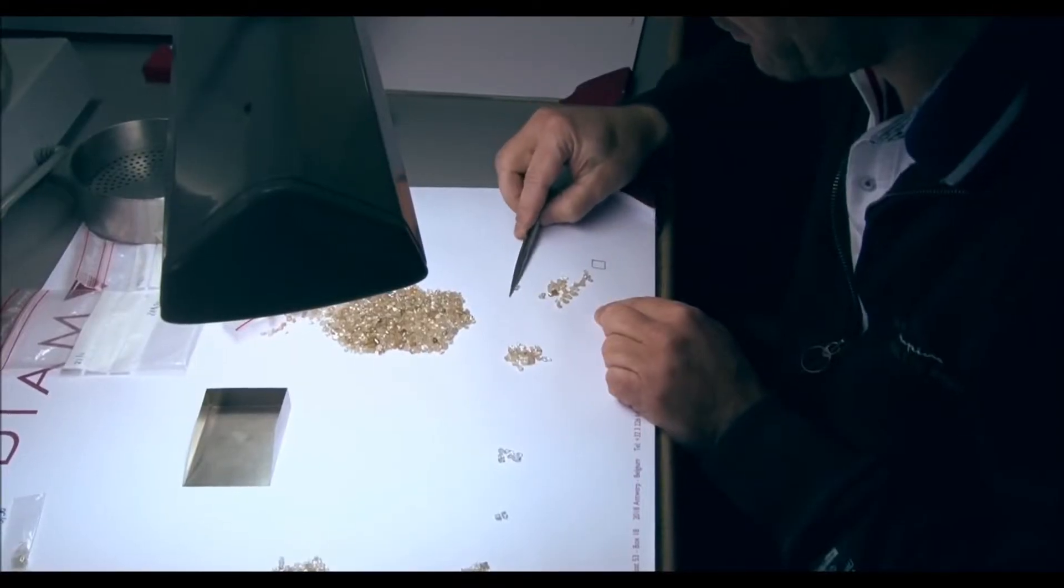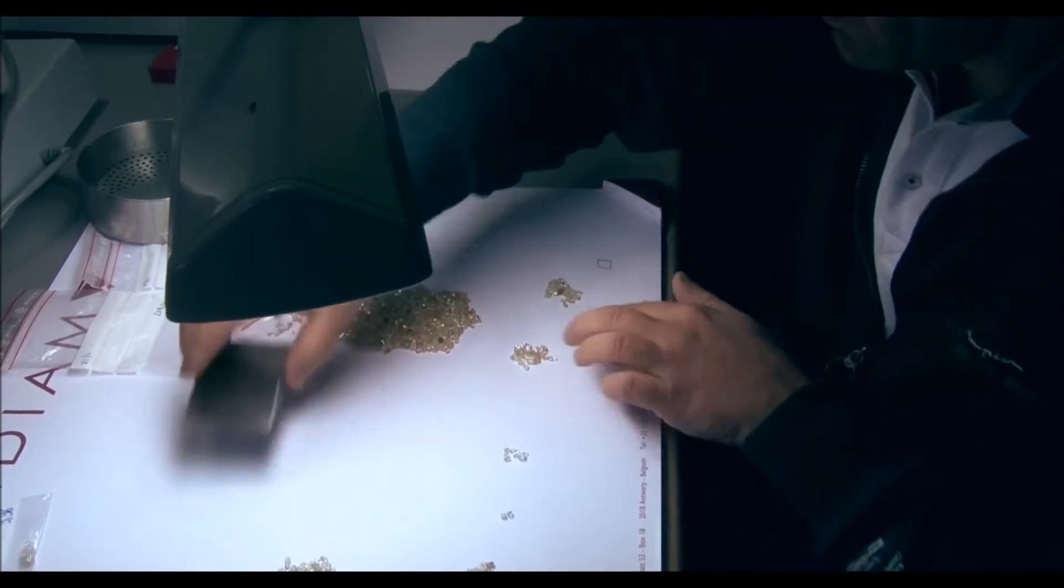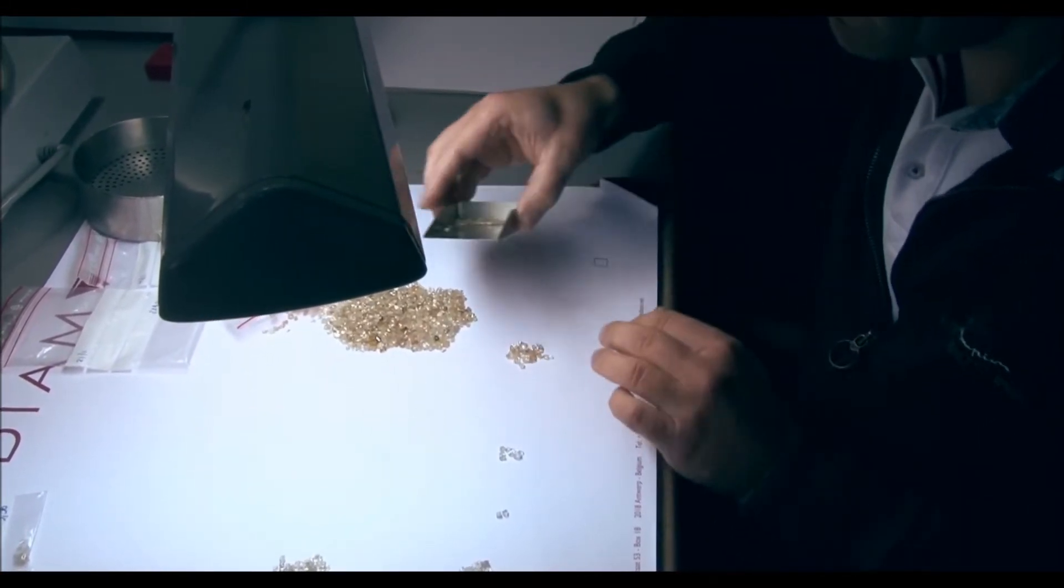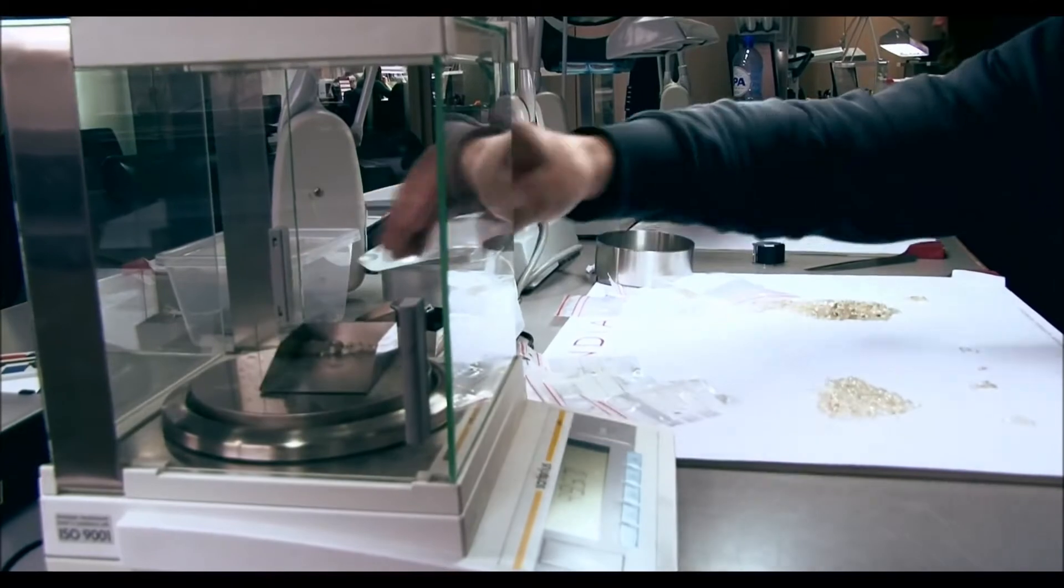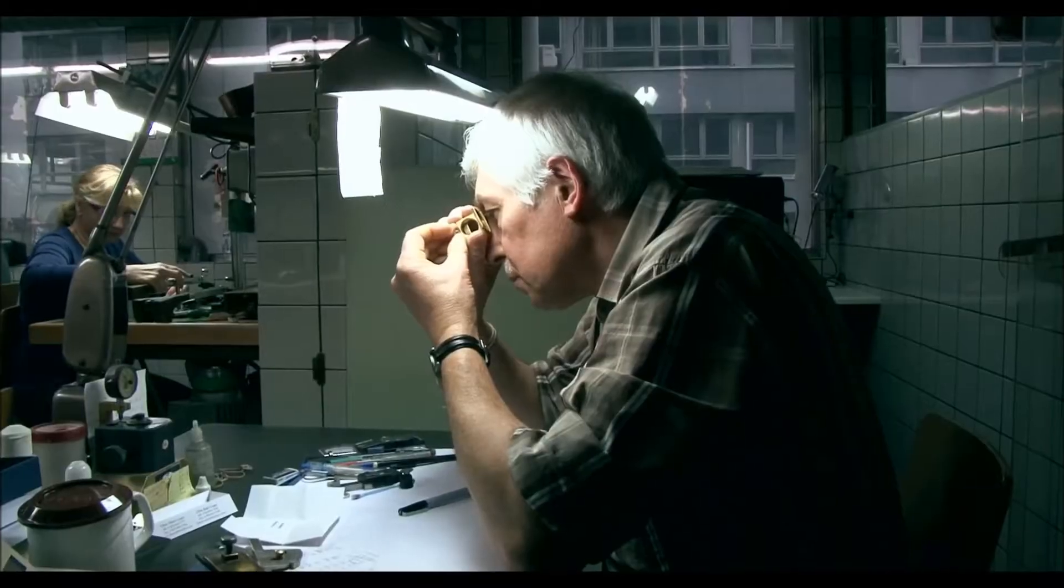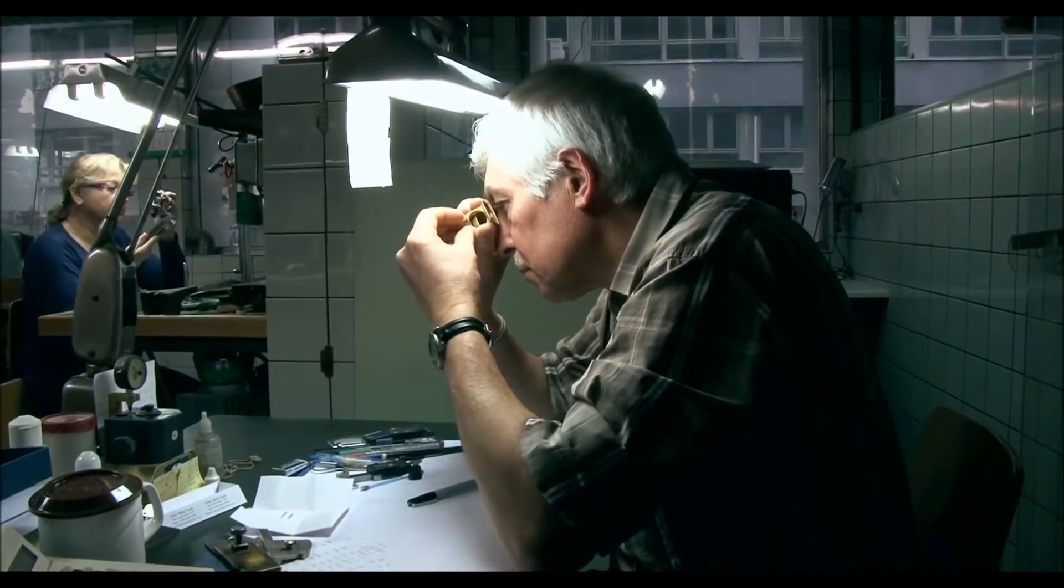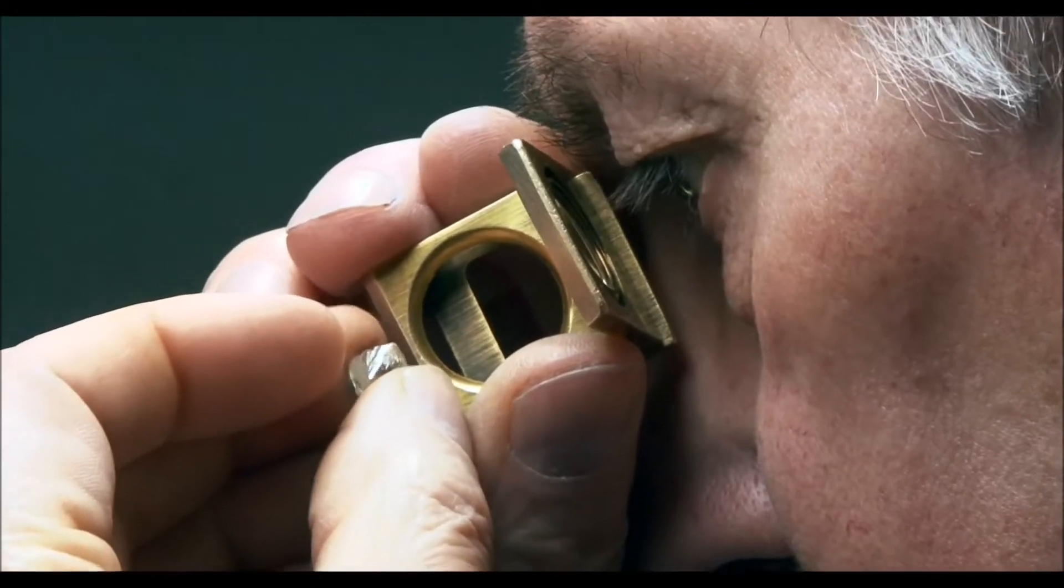Sawable stones, on the other hand, are cut in half in order to create two smaller diamonds. Once the rough has been sorted, the parcels are handed over to the head of polishing.